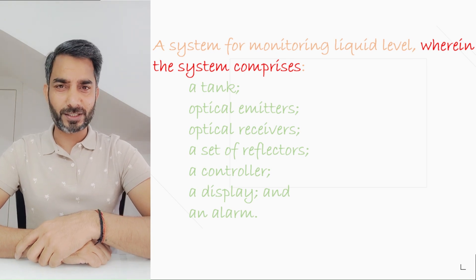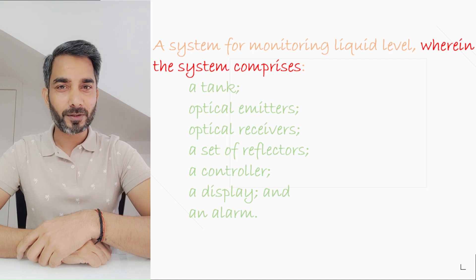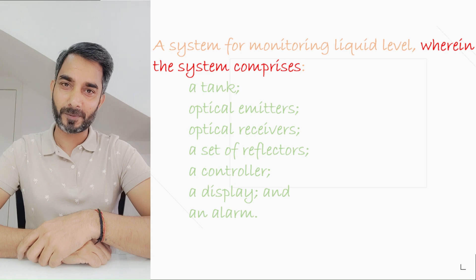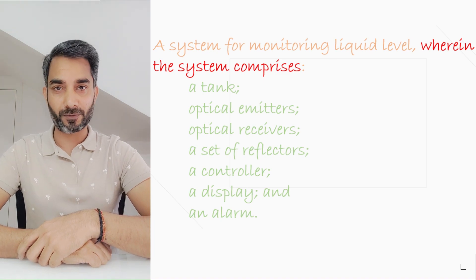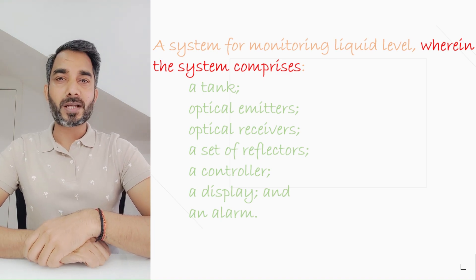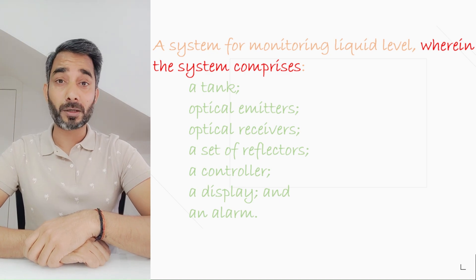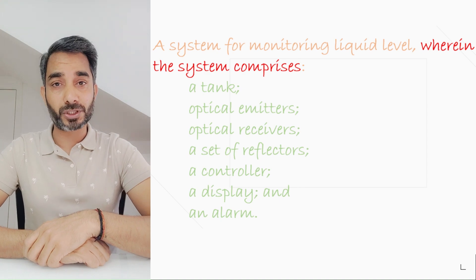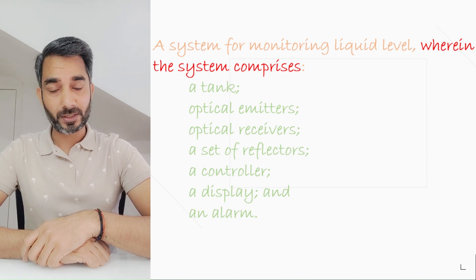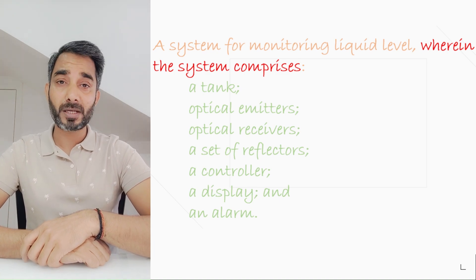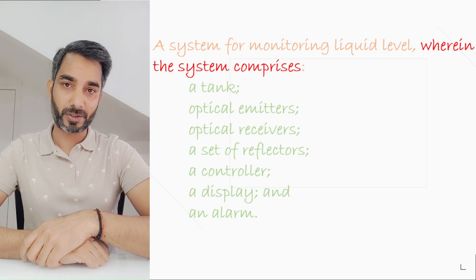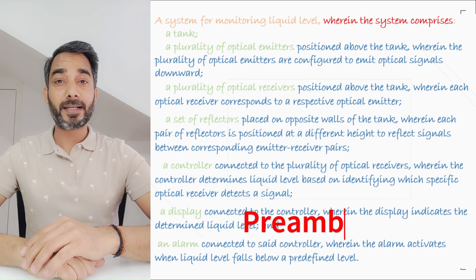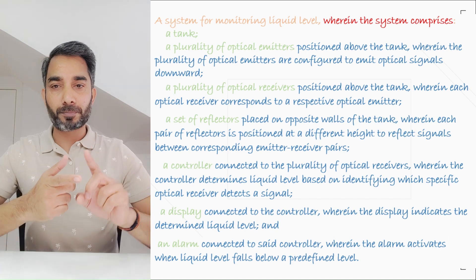But have we done any justice to show what is inventive about this invention? We have just listed down all the components. So let's refine it further by connecting all these components so we are able to identify the objective of the invention. We start putting a few words specific to claims and also some more information about each element — for instance, what is their position or how they interact with each other. With such limitations, we may be able to justify the inventive step or novelty. So this is how our second version would look like: a liquid level monitoring system comprising a tank, a plurality of optical emitters.